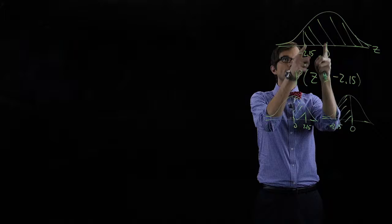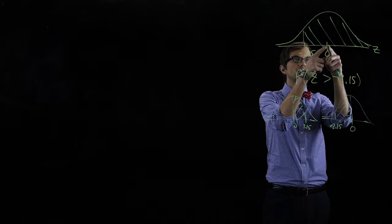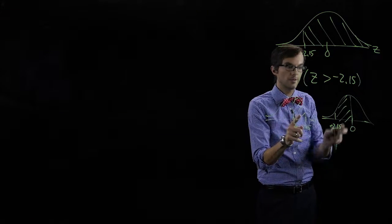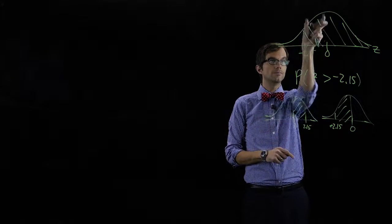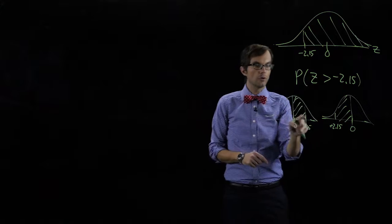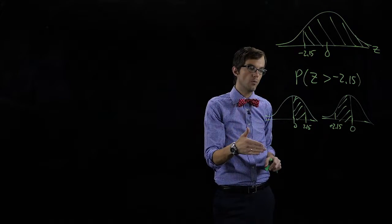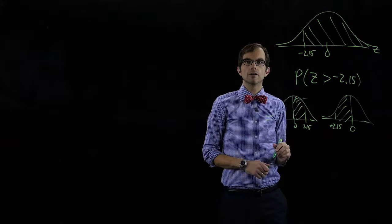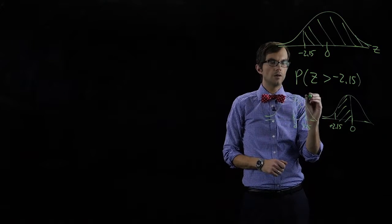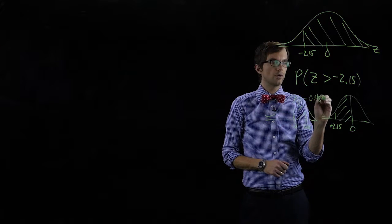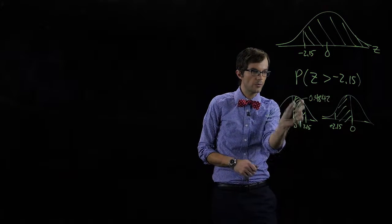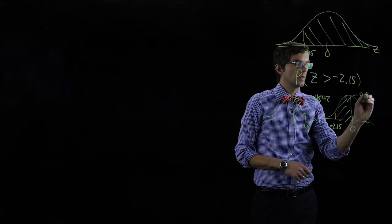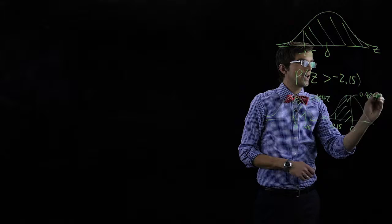We need to find this area, and we know that the area above zero is point five. So let's look up this area — it will be equivalent to the other side. If we go look this up in the z lookup table, we go down to row two point one, over to column point zero five, and that area is zero point four eight four two. That area between zero and two point one five, or equivalently between zero and negative two point one five, is point four eight four two.